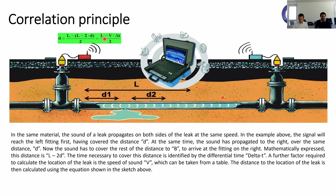The correlator output is a distance. The distance is calculated from the total length between sensors A and B, which must be known as a parameter. The correlator also needs pipe material and dimension, as those two factors influence the sound velocity of the pipe material. Together with the sound velocity and delta T, you get the distance, which is shown as the result of the correlation.